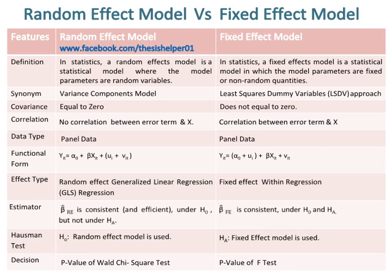The synonym of the Random Effect Model is Variance Components Model, whereas the synonym of the Fixed Effect Model is Least Squares Dummy Variables (LSDV) Approach. The covariance of the Random Effect Model is equal to 0, whereas the covariance of the Fixed Effect Model does not equal 0. There is no correlation between the error term and X in the Random Effect Model, whereas there is correlation between the error term and X in the Fixed Effect Model.